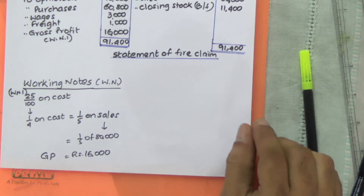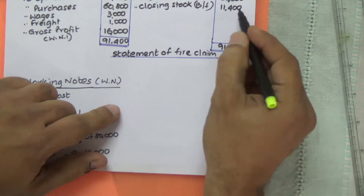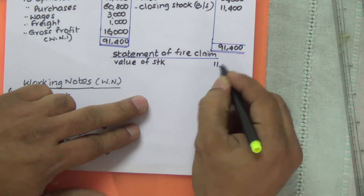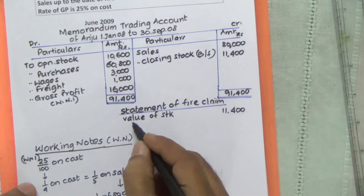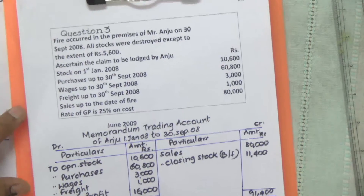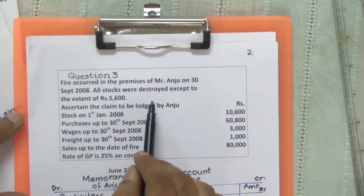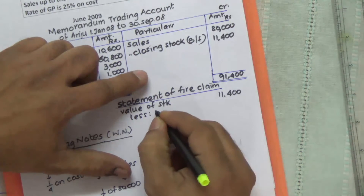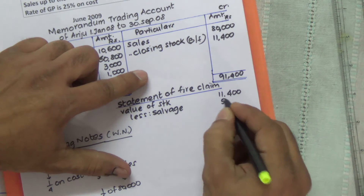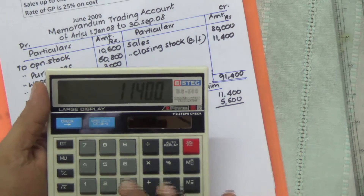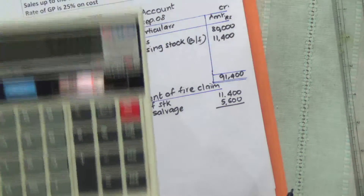The statement of fire claim is the value of stock on the date of fire, which is 11,400. This 11,400 is taken here. Less stock saved — stock saved is given in the problem as 5,600. All the stocks were destroyed except to the extent of 5,600, so that is the stock saved. Less salvage: 5,600. If we deduct that, 11,400 minus 5,600 gives 5,800.